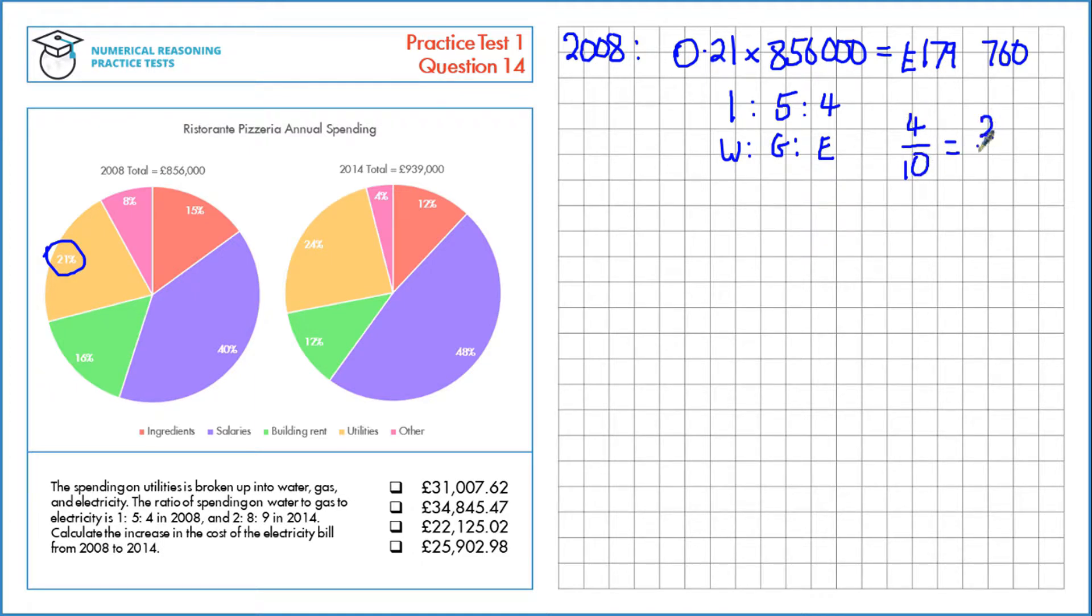We can simplify that down to 2 fifths. So if electricity represents 2 fifths of this value, the amount for just electricity is 2 fifths multiplied by the total on utilities, 179,760, which is £71,904.